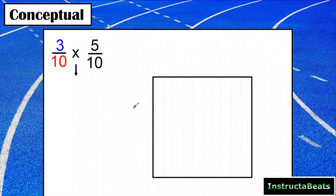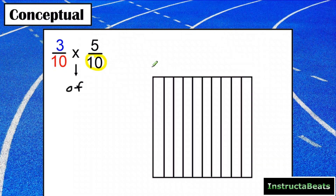But what if both of those were fractions? What if I wanted 3 tenths of 5 tenths? The first thing I'd have to do is split my area model into 5 tenths. Here are my 10 equal groups already, and I want 5 of those shaded — 1, 2, 3, 4, 5. There's my 5 tenths. But now I want 3 tenths of those 5 tenths.